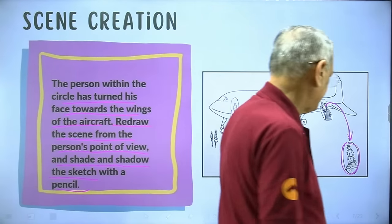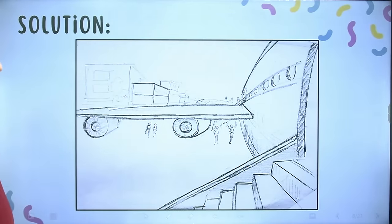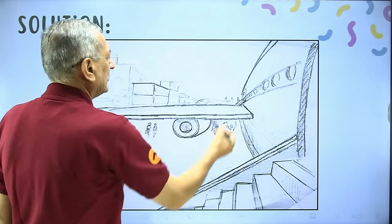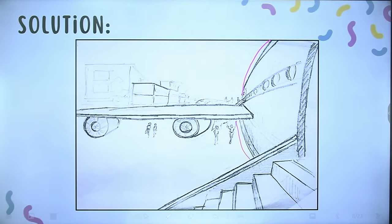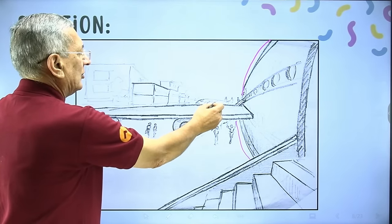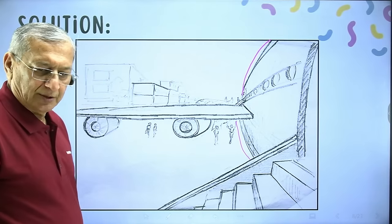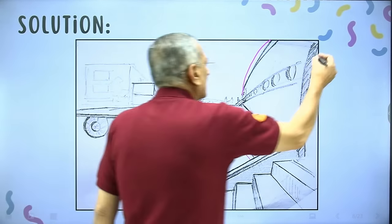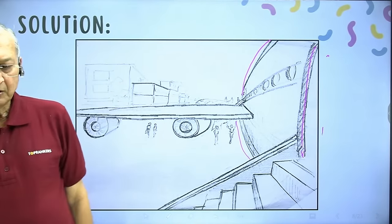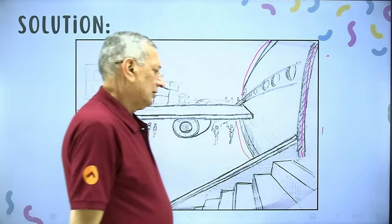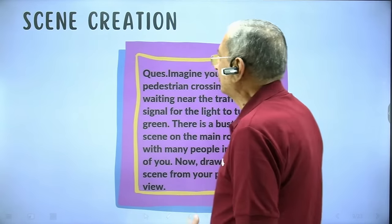Here is the answer: from the staircase, he is looking towards the wings of the aircraft. This is the aircraft. Other planes are visible to the person who has turned there. Then the building of the airport, and this is the part of the gate from where he is coming out. A scene creation can be very interesting — you must revise quite many times.